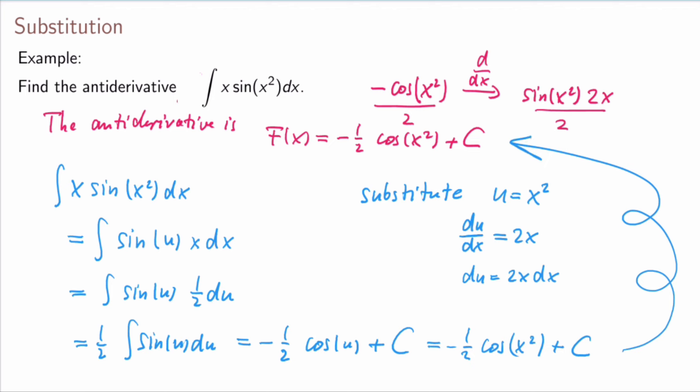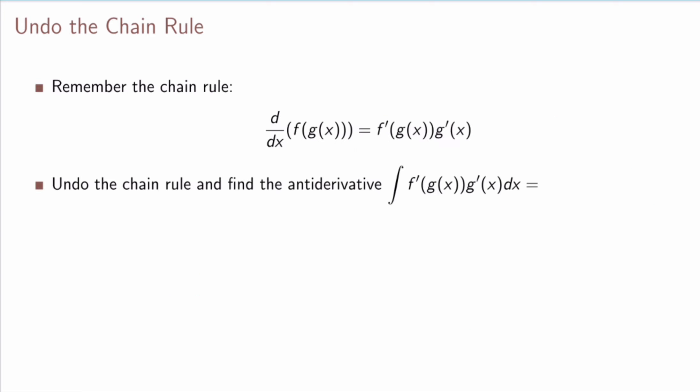In the end, substitution undoes the chain rule. Recall the chain rule: d/dx [f(g(x))] = f′(g(x))·g′(x). For substitution to work, we want to see an integral of the form ∫f′(g(x))·g′(x) dx, and the tricky part is identifying what g and f are in any given example.